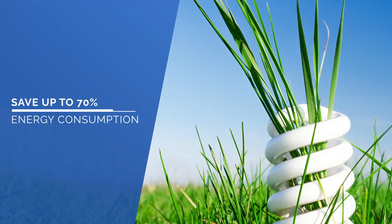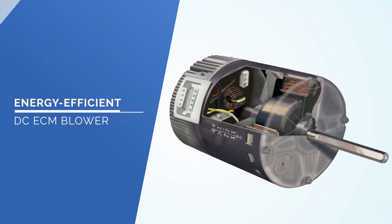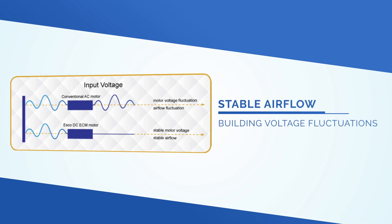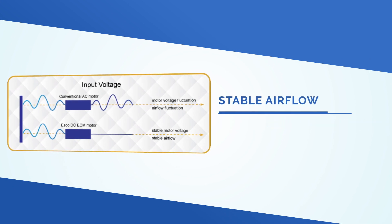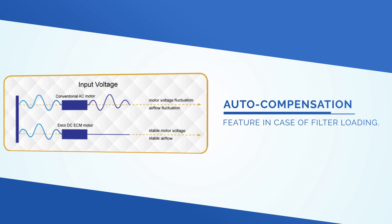Save up to 70% of your energy consumption with the energy-efficient DC-ECM blower, which also provides stable airflow despite building voltage fluctuations and auto compensation in case of filter loading.